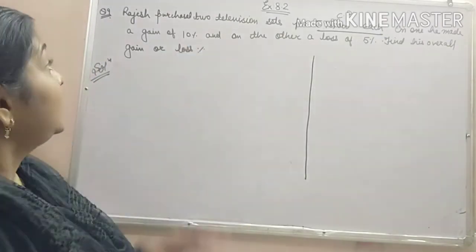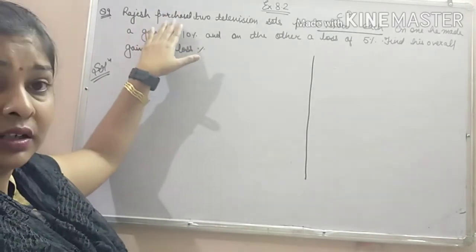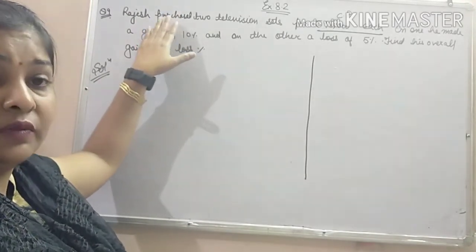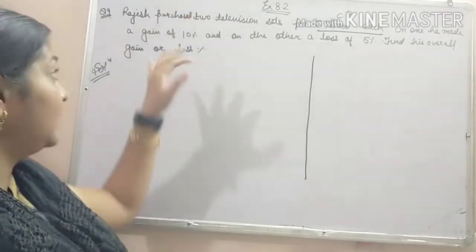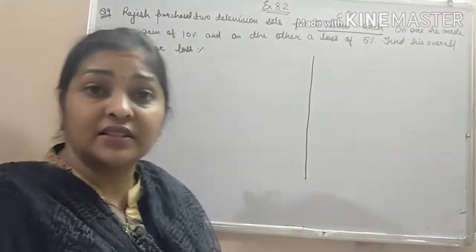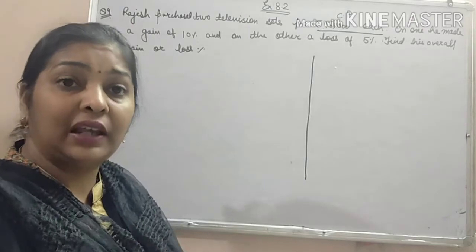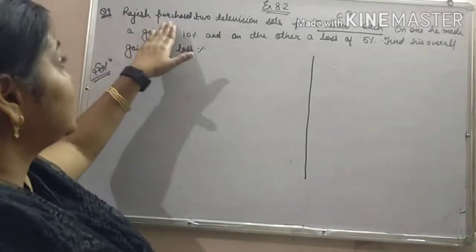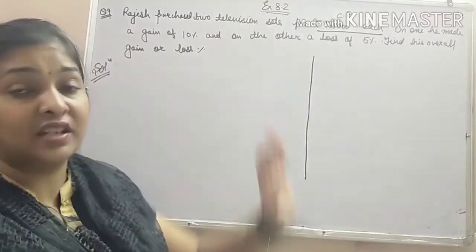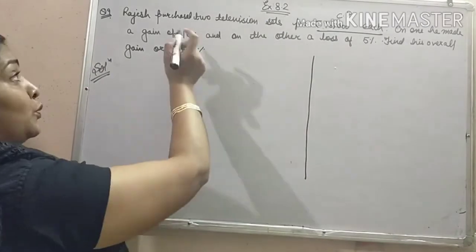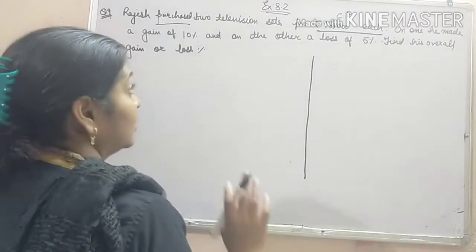In some books — the old books — it is given 'purchased', and in some books it is given 'sold'. You have to solve this problem using 'purchased', because whenever 'sold' is given and 16,000 is the selling price, the calculation is very complex. To avoid that, we have changed this problem to 'purchased'. If in your book 'sold' is given, then change it to 'purchased'.